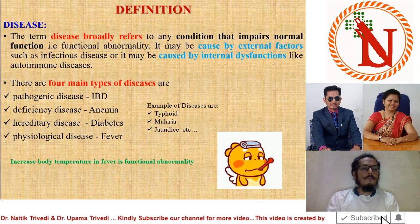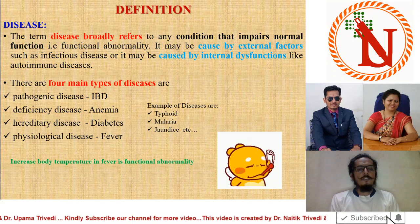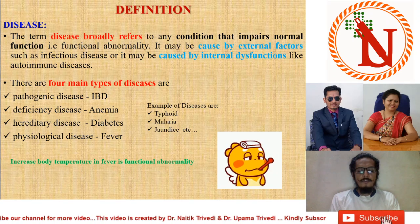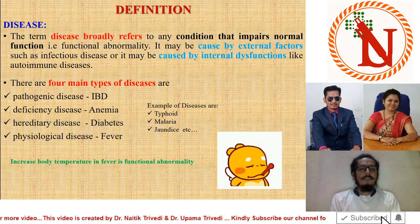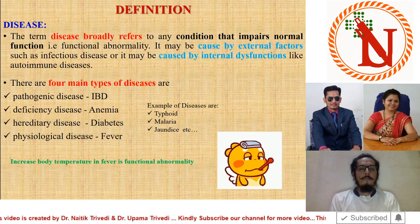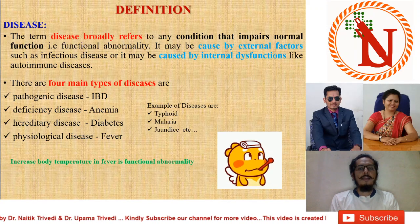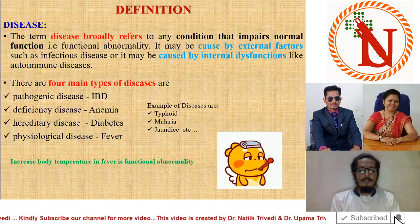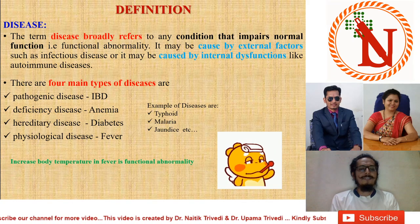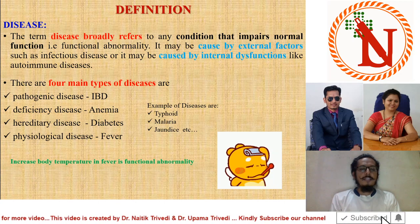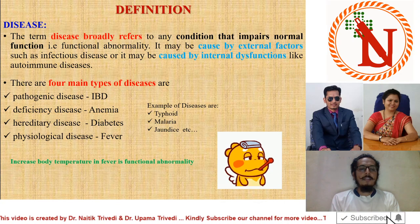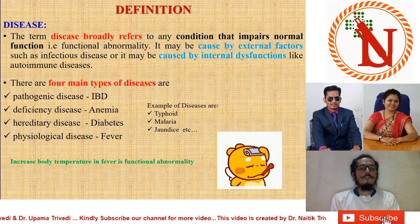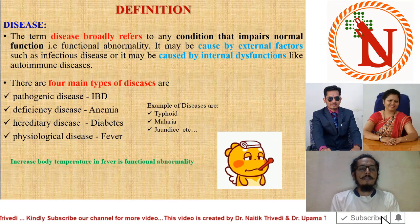The first category is pathogenic disease. An example is inflammatory bowel disease. In inflammatory bowel disease, a bacterium known as Helicobacter pylori enters into the ileum and produces pathological changes in your gastrointestinal tract. Bowel movement becomes disturbed and it also produces ulcers. That's why it is known as pathogenic disease because it arises from a pathogen.